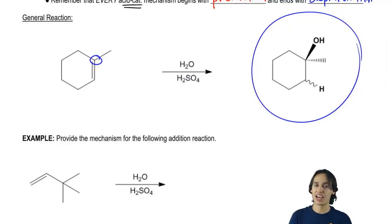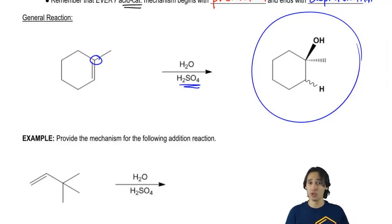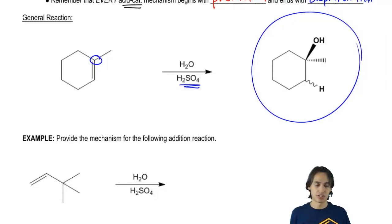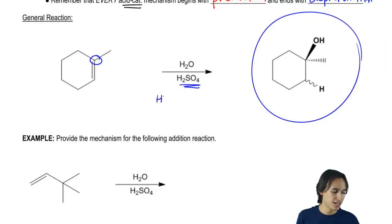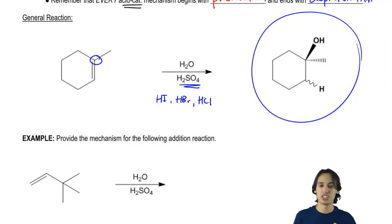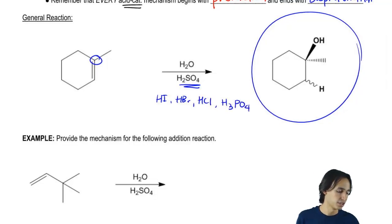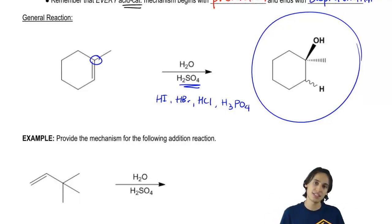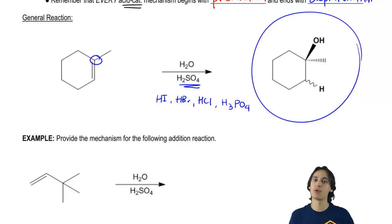Now, the reagents can change a little bit for hydration. You're always going to see water and an acid, but that acid doesn't always have to be H₂SO₄. Many times it will be — that's actually the most common acid used. But theoretically you could use any strong acid, such as HI, HBr, HCl, or phosphoric acid (H₃PO₄). These are reagents you'll often see, not as common as sulfuric acid, but you could see them in combination with water. We're just looking for an acid that's going to give away a proton in the first step.